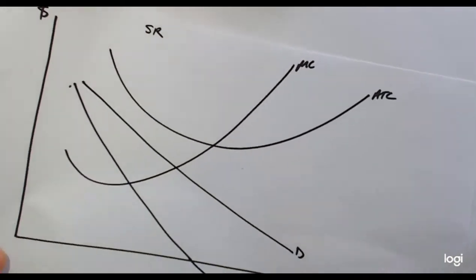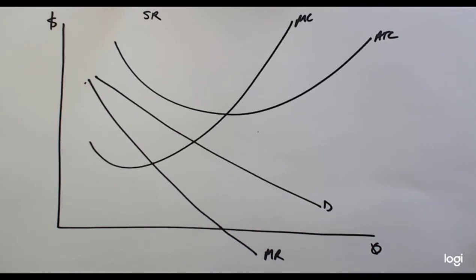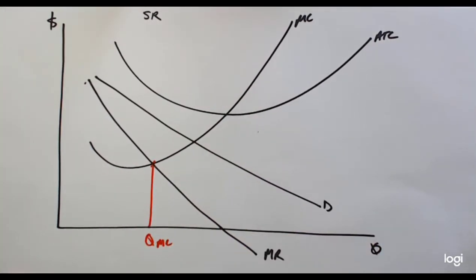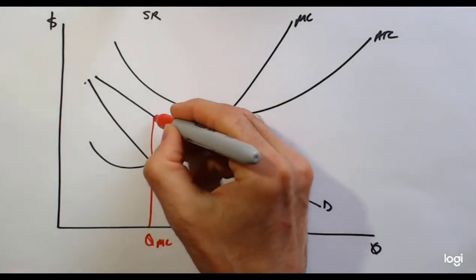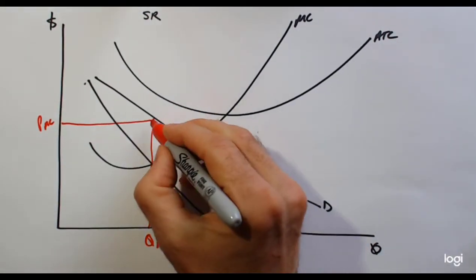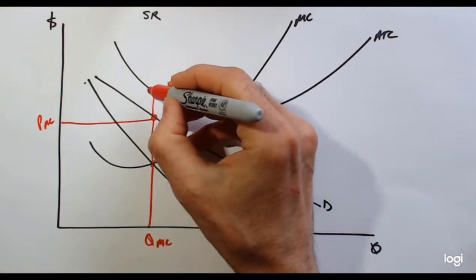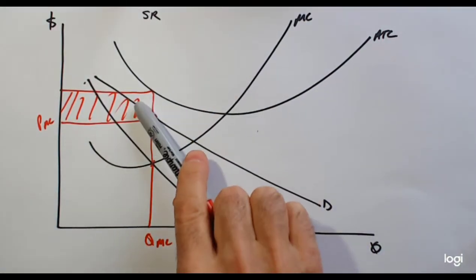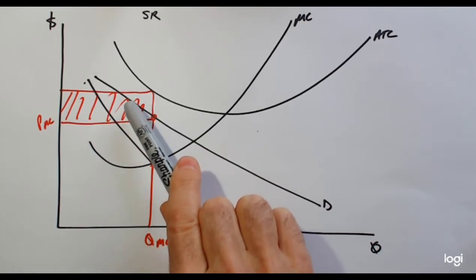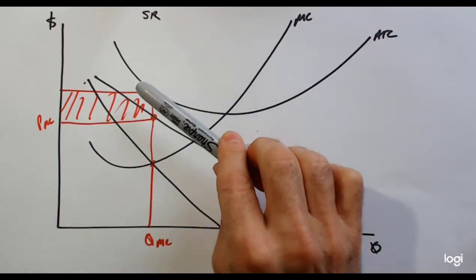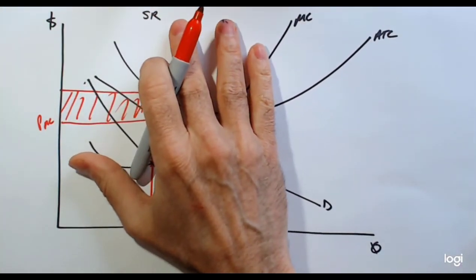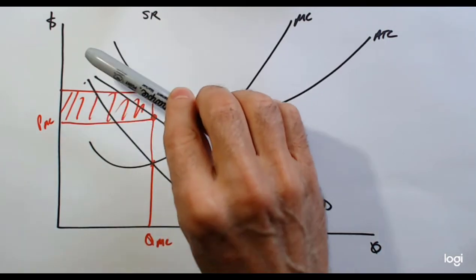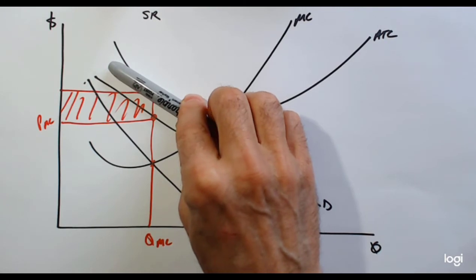Now let's show what happens when there is a loss. Here again it's a monopolistically competitive firm, and the optimal output is at QMC where marginal cost equals marginal revenue. We come up and over, and this will be the price for the monopolistically competitive firm. The average total cost curve is up here, so this firm is making a loss. What's going to happen is other firms in the industry are going to be exiting. When they exit, the demand curve faced by this particular firm will shift up — it'll shift up until it's tangent to the average total cost curve.